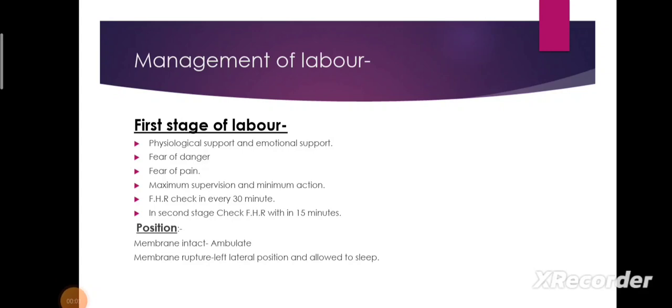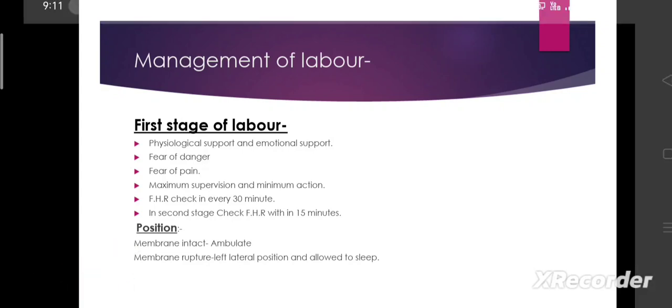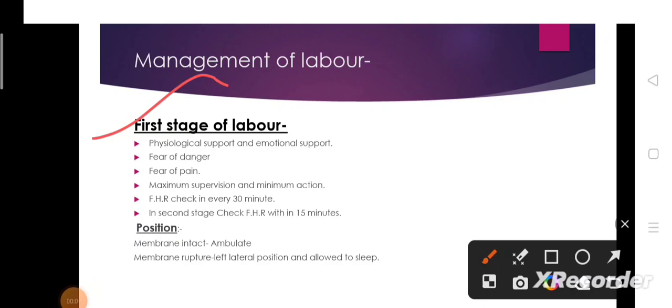Management of labor: first stage of labor. In the first stage of labor, the stage begins from true labor pain and ends with the full dilatation of the cervix. During the first stage of labor, a nurse provides psychological support and emotional support to the pregnant mother, because as the labor process gets closer, the pregnant mother worries a lot.